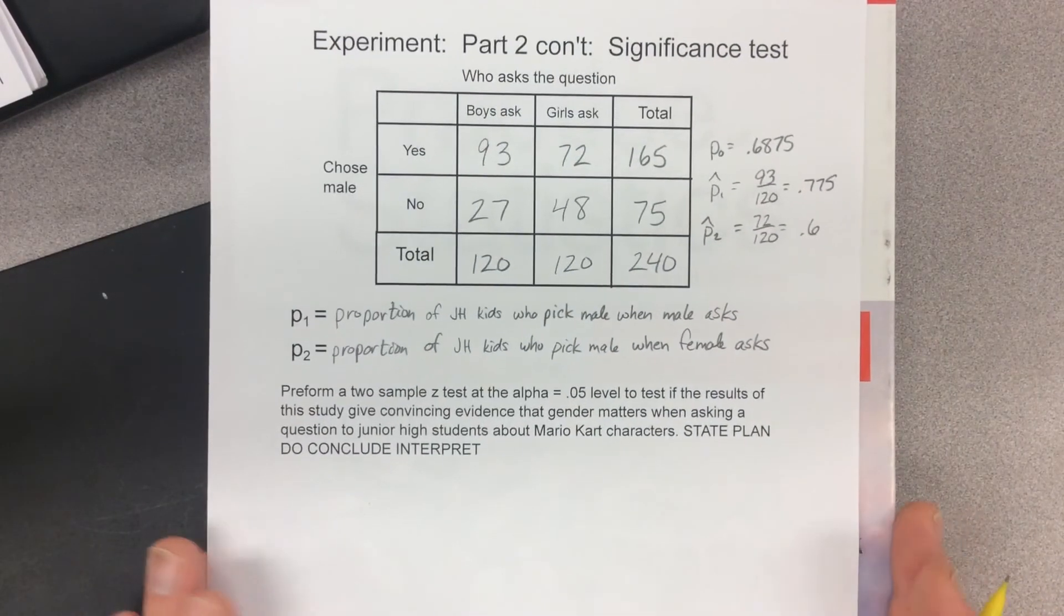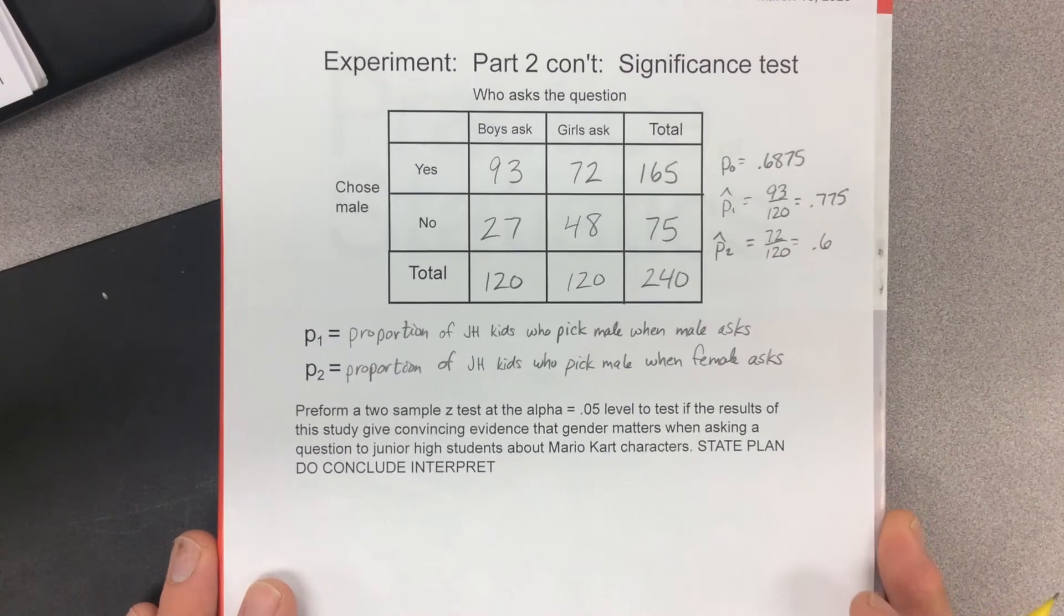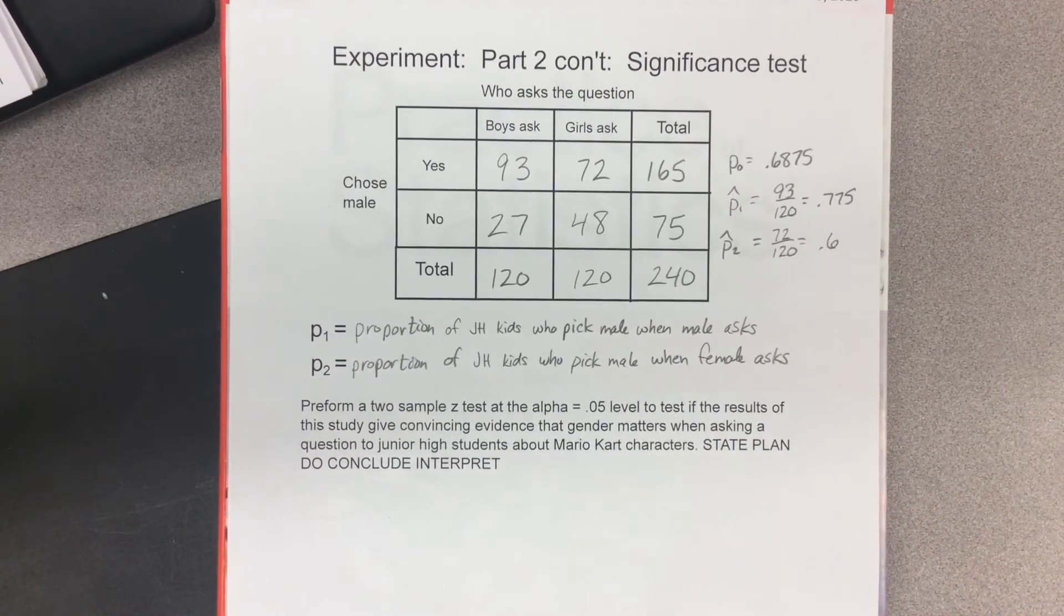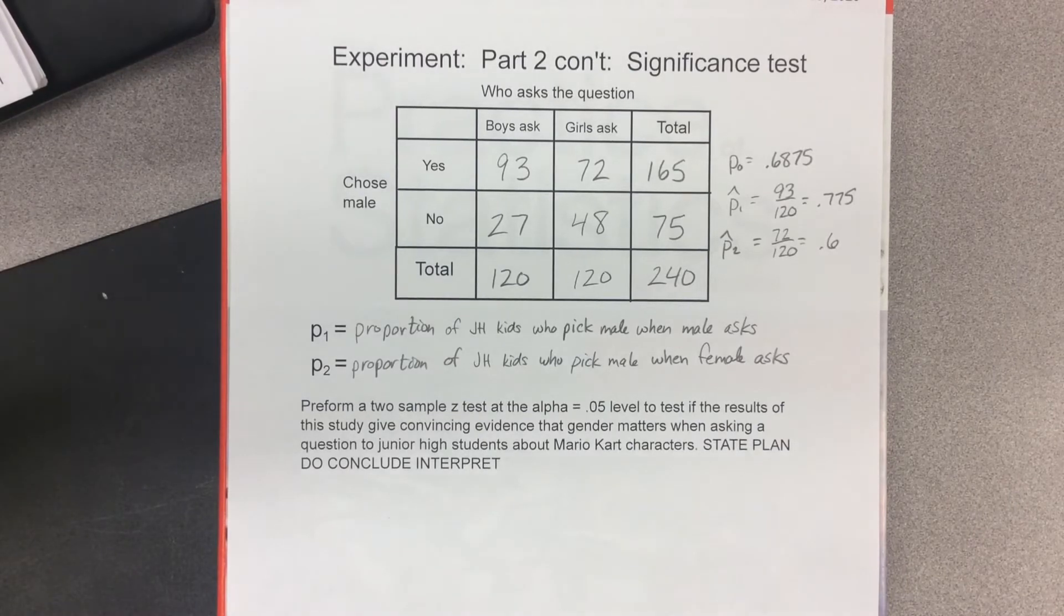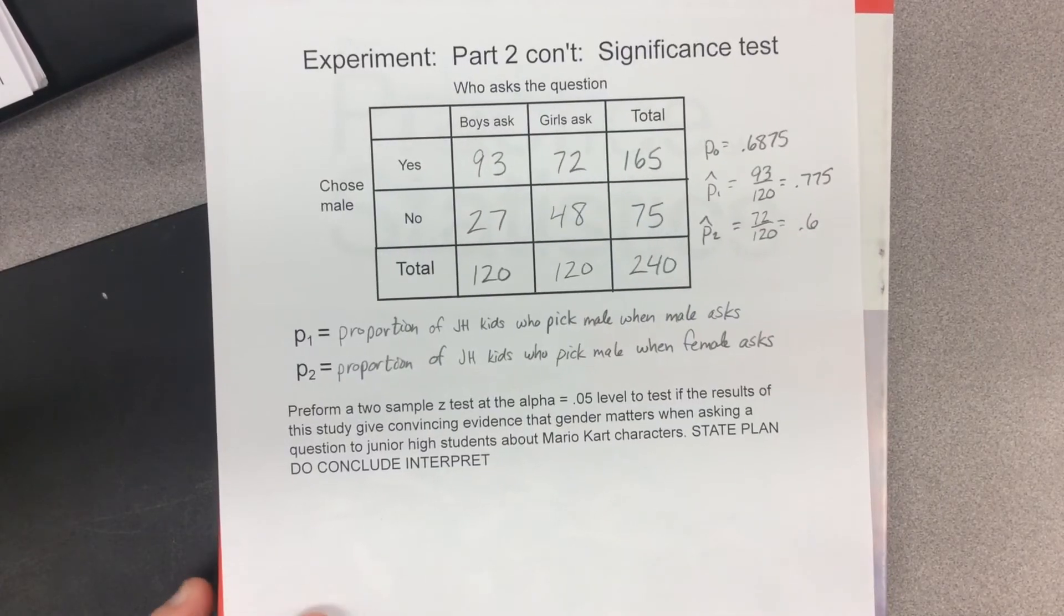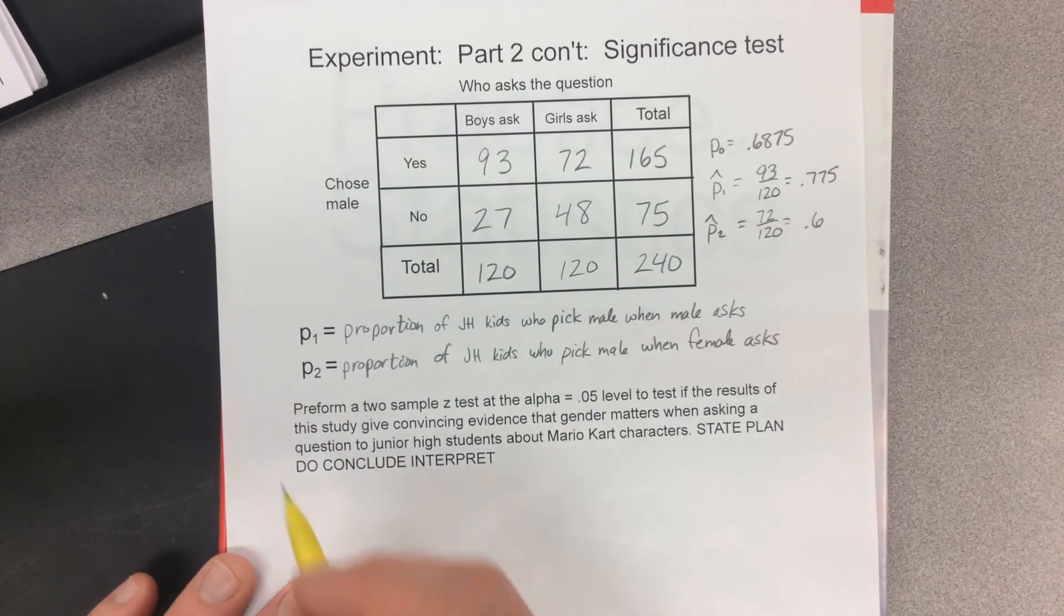The next one is the significance test part. I'm going to help you set this one up also. Similar situation, similar numbers, all the numbers are the same. We do want to create a significance test here. Still less powerful than the confidence interval, but it has its merits. You can press pause and fill in those numbers right now. Let's go. State.